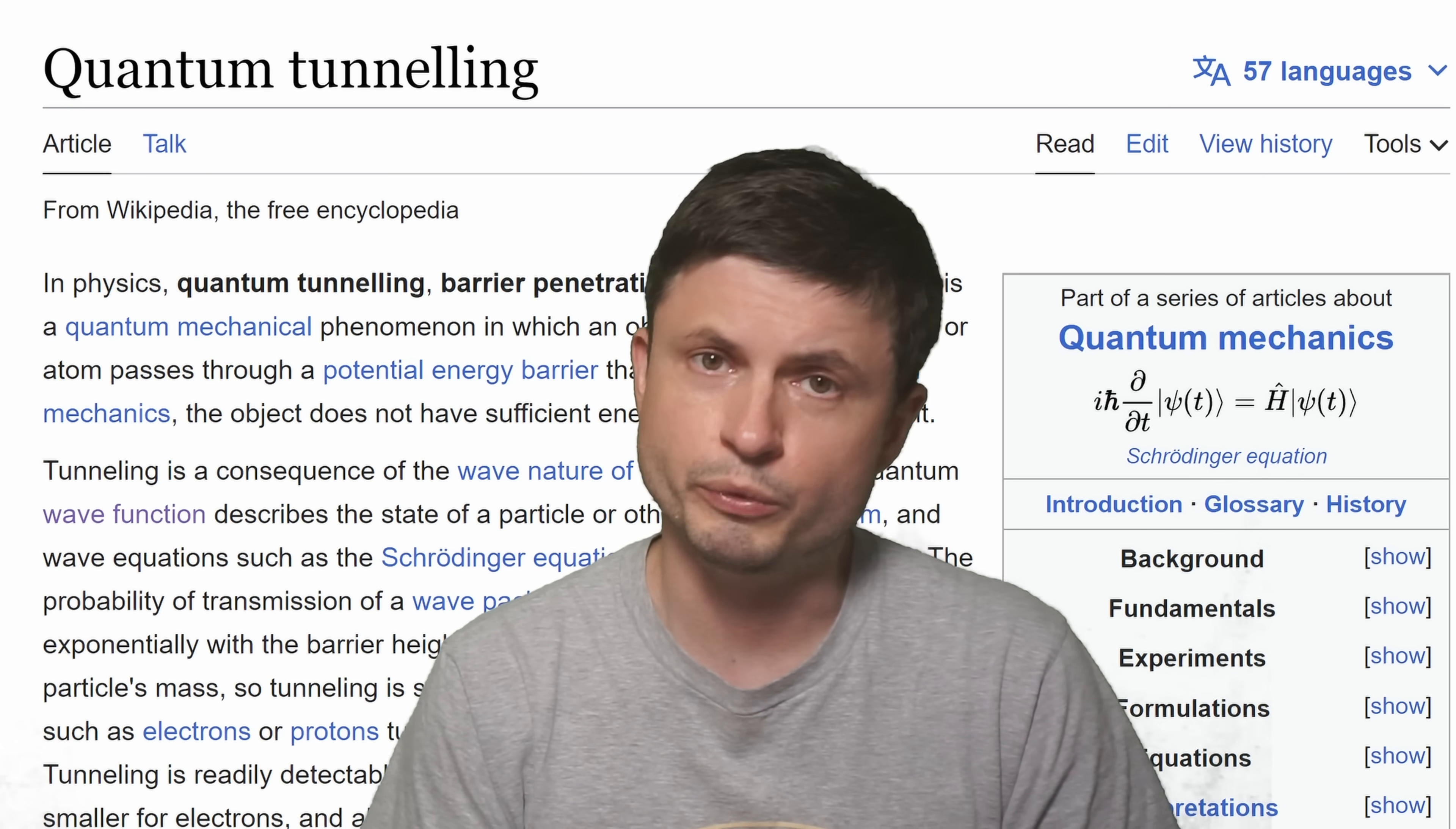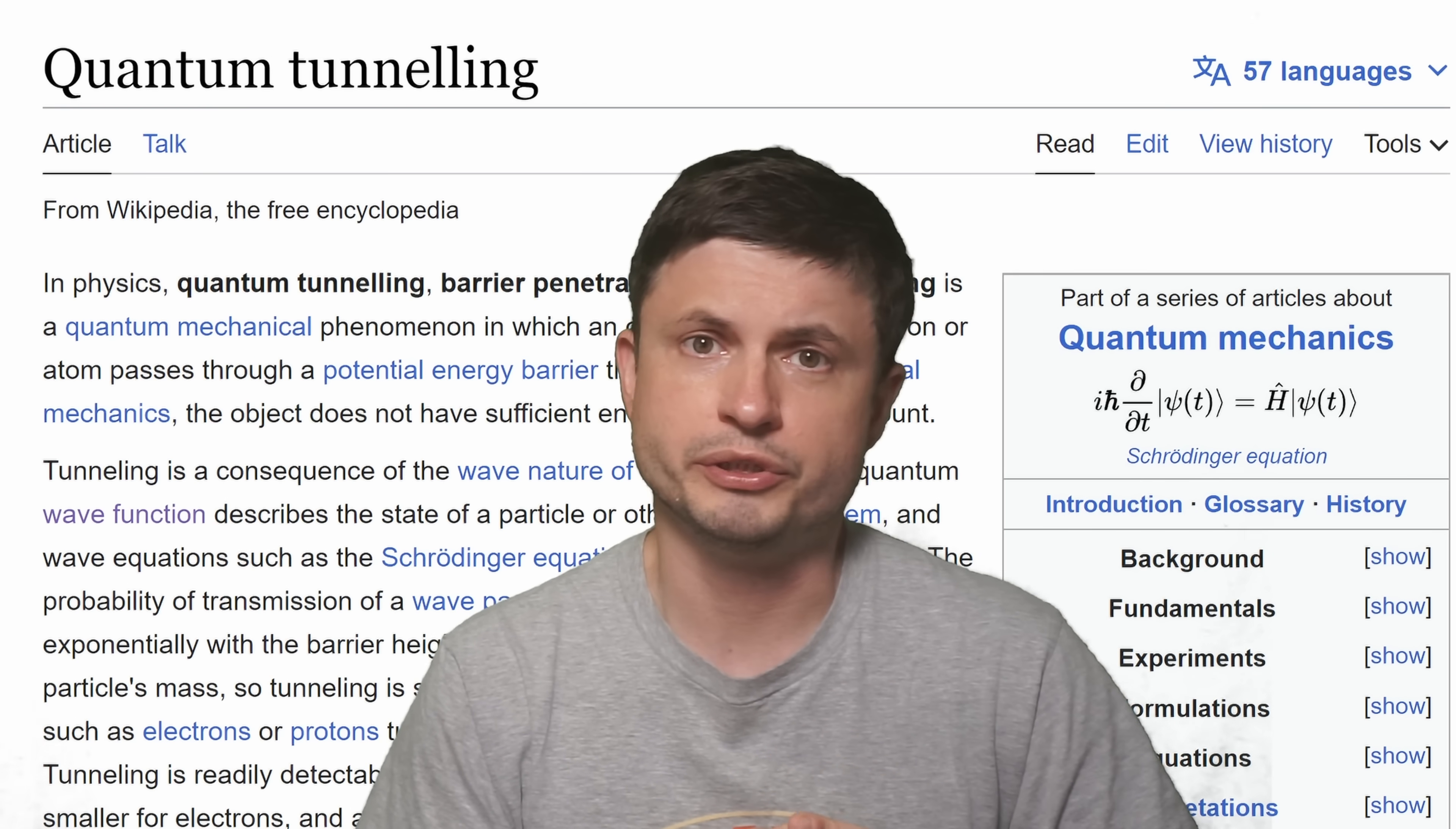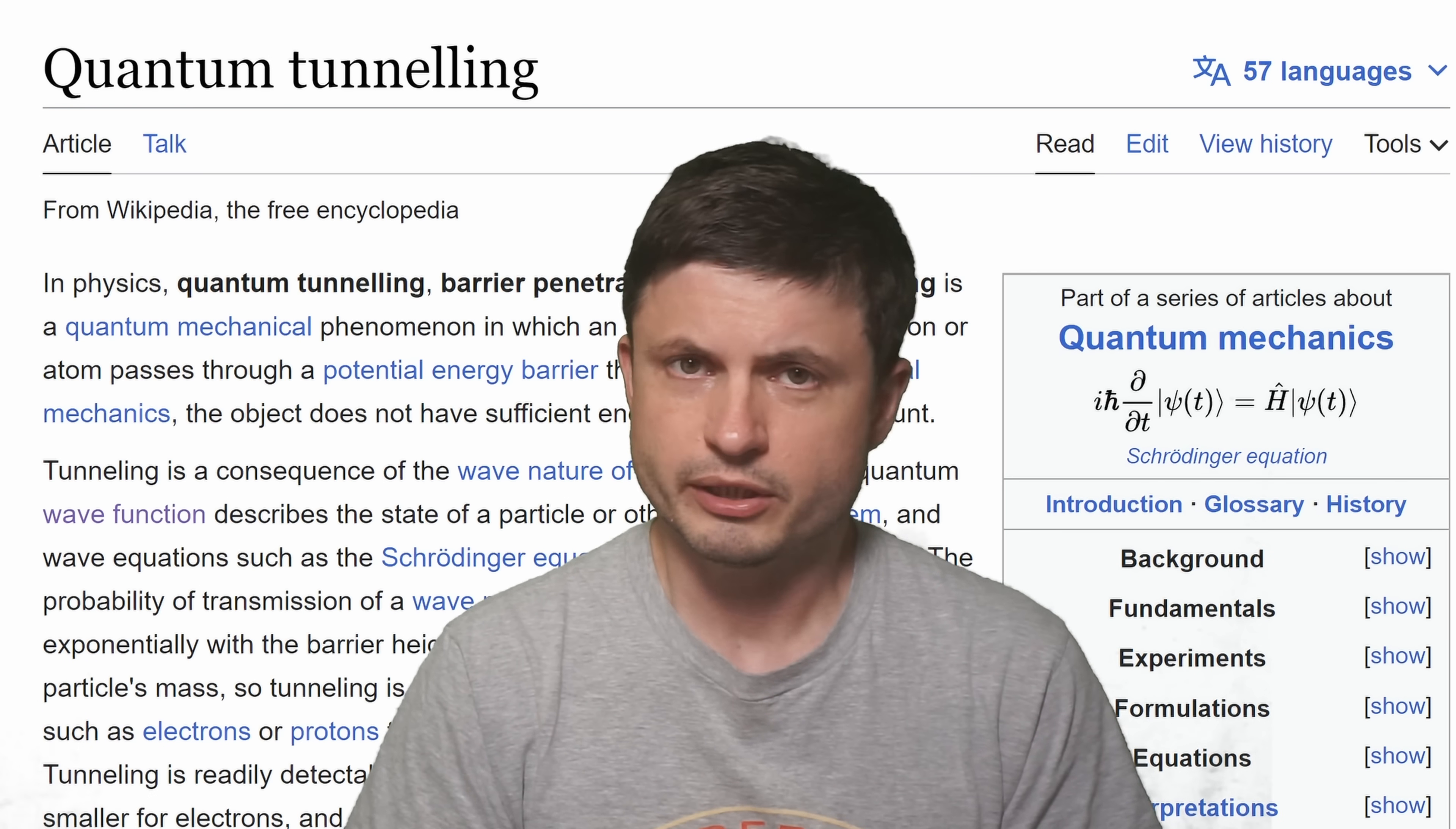For example, quantum tunneling is the reason we have things like nuclear fusion inside the sun. All of the heat produced from the sun, with all of the hydrogen fusing and producing helium, is actually a result of quantum tunneling and not any classical physics at all.